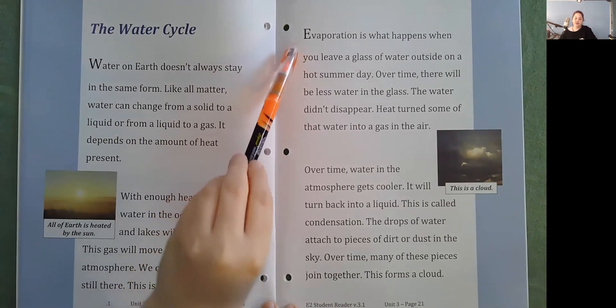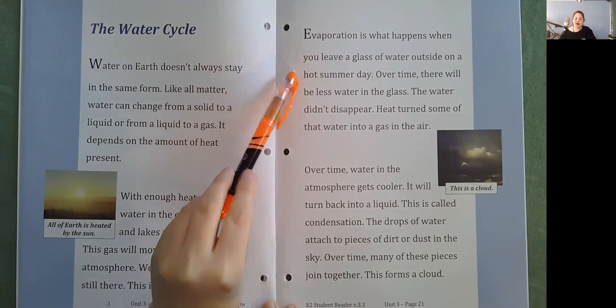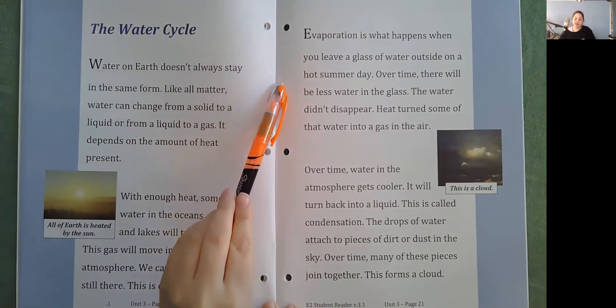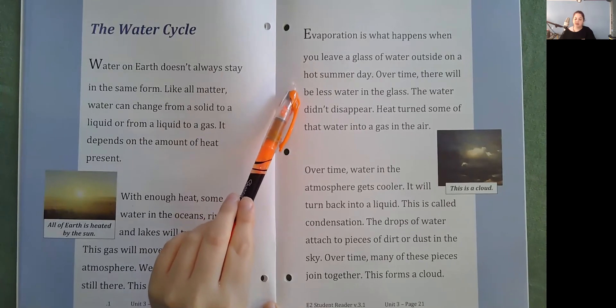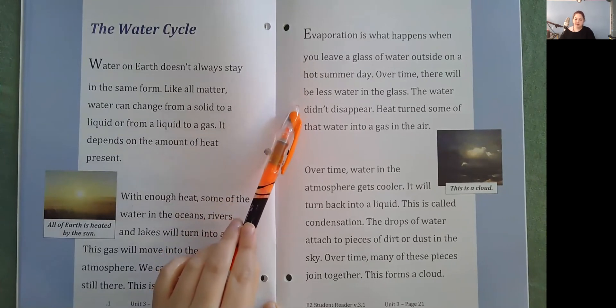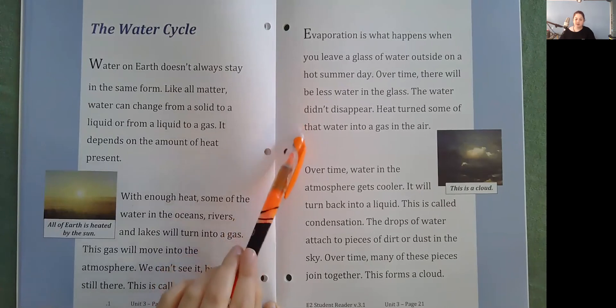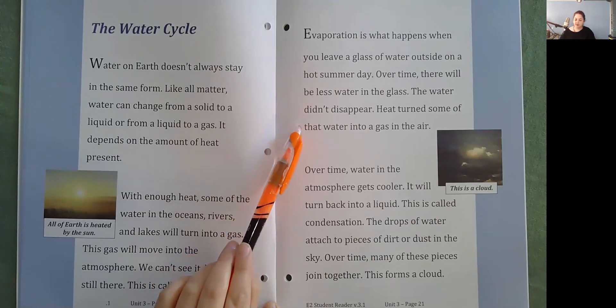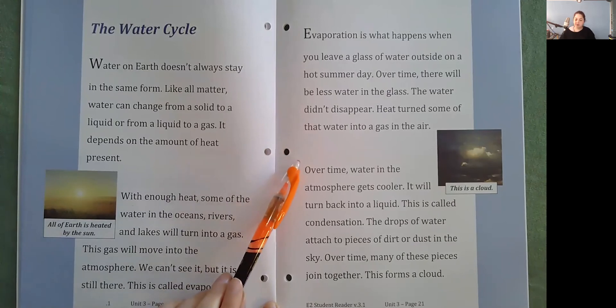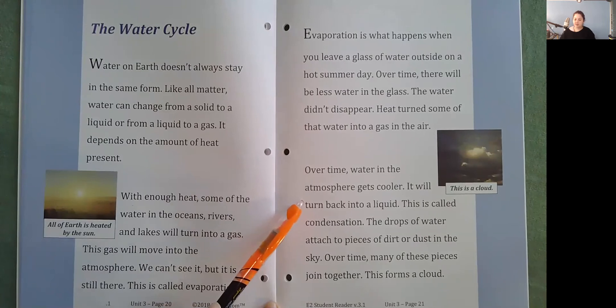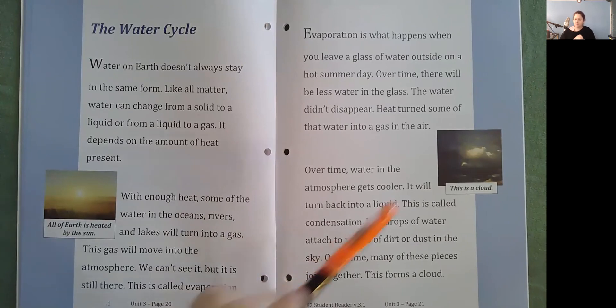Evaporation is what happens when you leave a glass of water outside on a hot summer day. Over time, there will be less water in the glass. The water didn't disappear. Heat turned some of that water into a gas in the air. Over time, water in the atmosphere gets cooler. It will turn back into a liquid. This is called condensation. The drops of water attach to pieces of dirt or dust in the sky. Over time, many of these pieces join together. This forms a cloud.